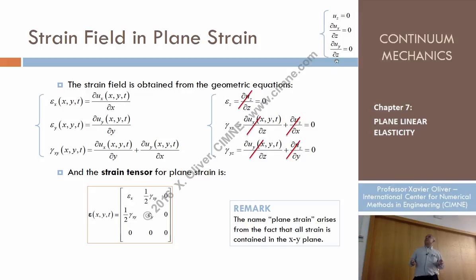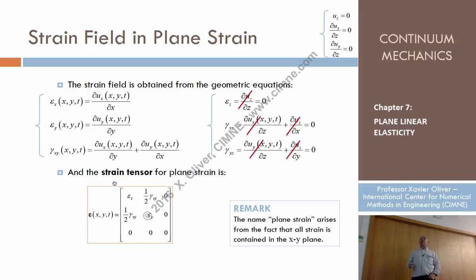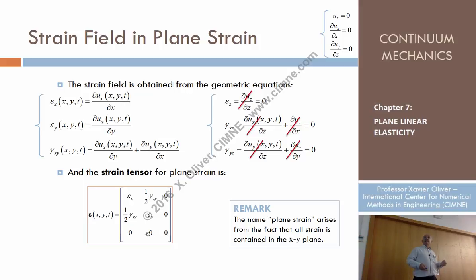If these hypotheses hold and we compute the strain field, we see that the components EZ, gamma XZ, and gamma YZ are zero by construction — because UZ is zero, or because the derivatives of UX and UY with respect to Z are zero. The non-zero strains — epsilon X, epsilon Y, and gamma XY — are functions of X and Y. So the strain tensor has all out-of-plane components equal to zero. In other words, the non-zero strains are contained in the plane of the analysis. This is where the name 'plane strain' comes from.